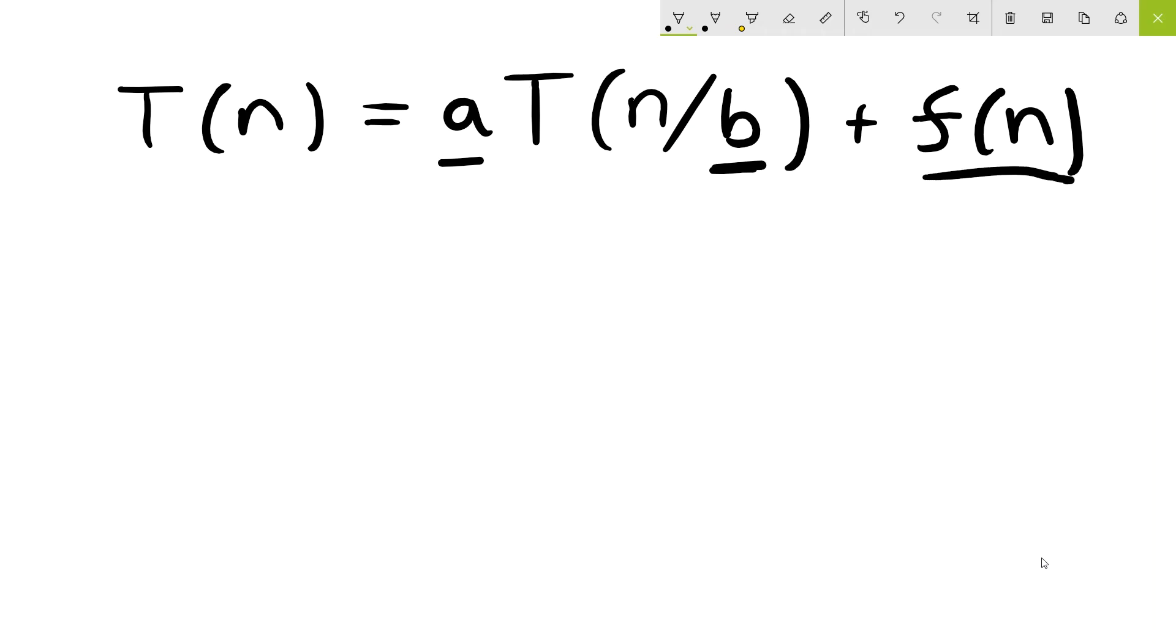So then there's two constraints. There's a constraint on a, and it has to be greater than or equal to one, and b has to be greater than one.